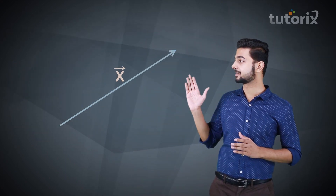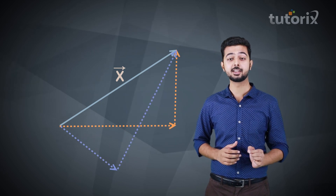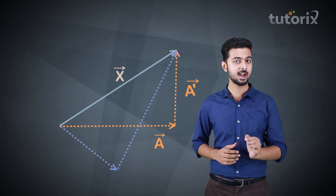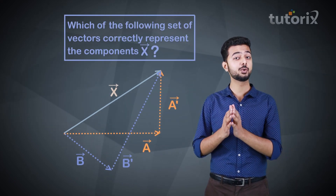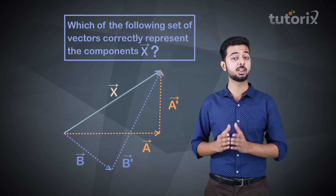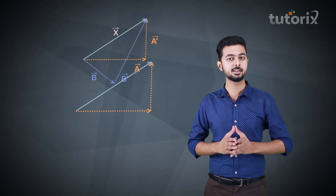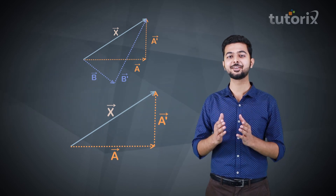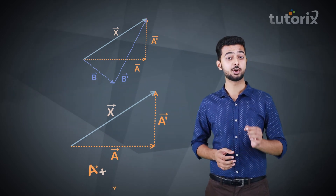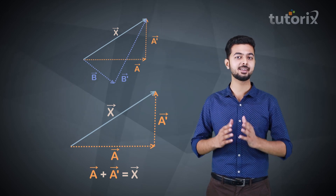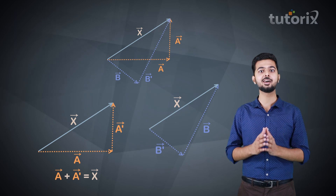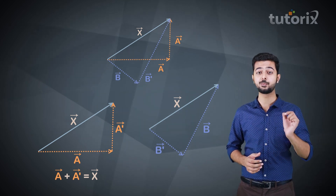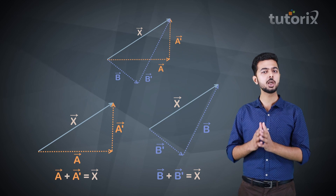Now here is an interesting question. Have a look at vector X. Two different sets of vectors — vector A and vector A-dash, and vector B and vector B-dash — are drawn for vector X. Which of these two sets correctly represents the components of vector X? If your answer is vector A and vector A-dash, you are correct, because vector A plus vector A-dash equals vector X. But if your answer is vector B and vector B-dash, you are also correct, because vector B plus vector B-dash also equals vector X.